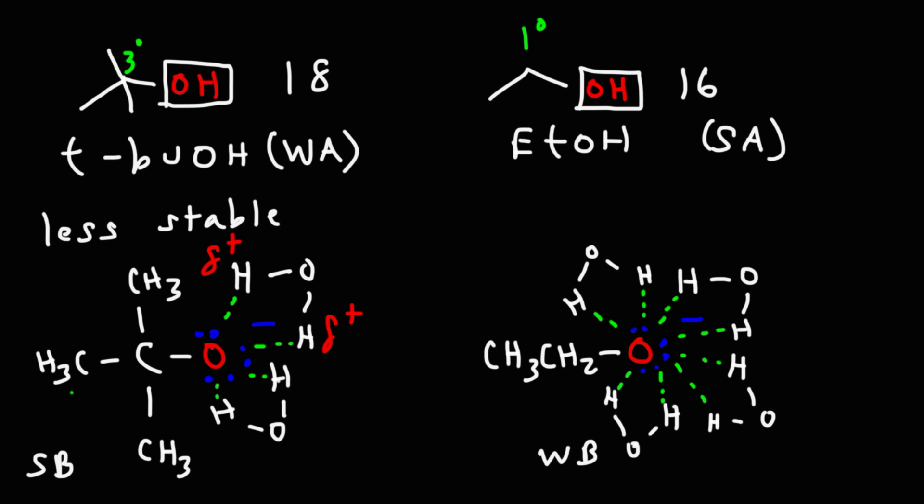So that's why ethoxide is a weaker base than tert-butoxide. It's because the oxygen atom is better stabilized by the additional solvent interactions. So because it's not sterically hindered there are more water molecules that can stabilize the negative charge making this a weaker base.